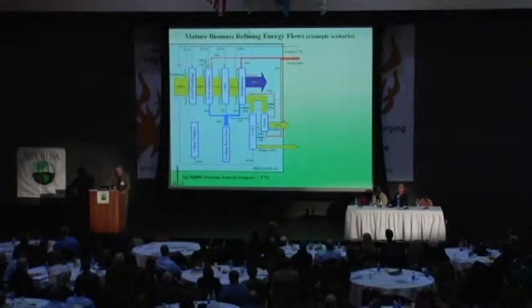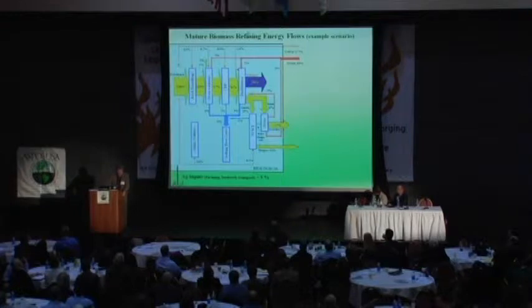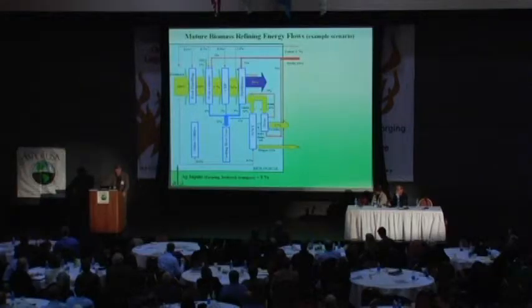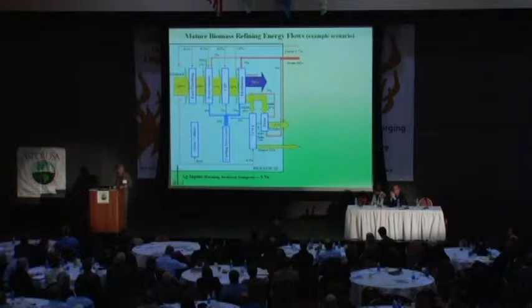A lot of different processes fall more or less into three different families. Following 100 units of energy through this particular scenario of a mature cellulosic biomass refining facility: of those 100 units of energy, about 54 would come out as ethanol — you won't get much more than that. It takes about 5% of the energy in the cellulosic biomass to grow it, transport it, store it, and have it present at the facility.